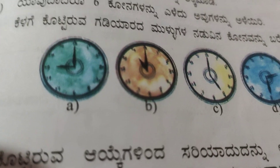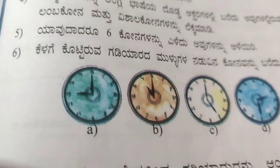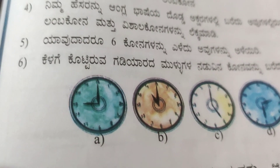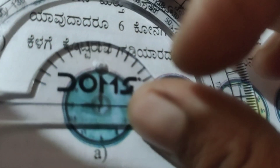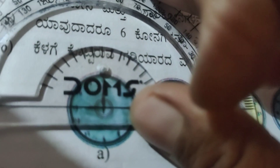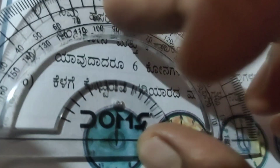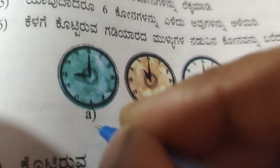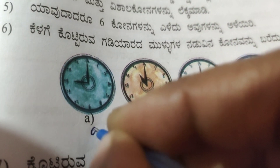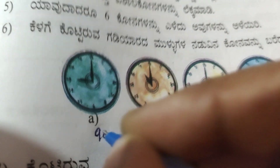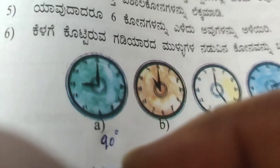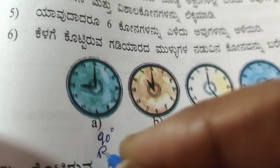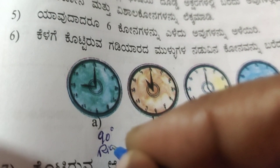Looking at the first clock figure, the angle between the two hands is exactly 90 degrees. So this is a right angle.